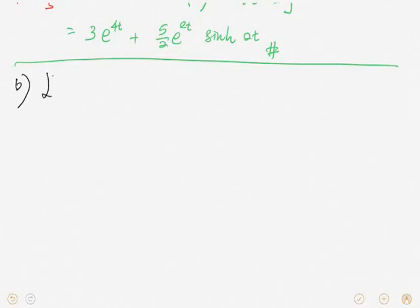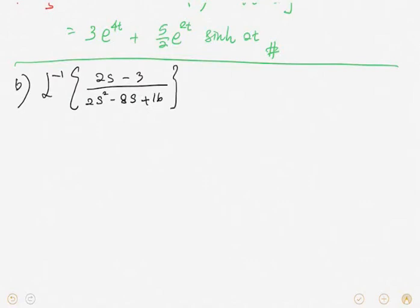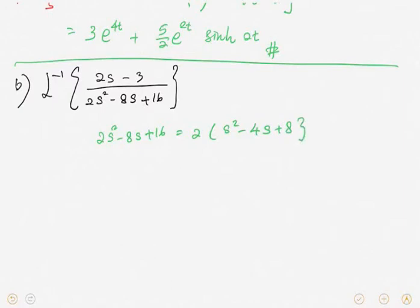Let's look at another example. Example B: inverse Laplace transform of (2s - 3) divided by (2s² - 8s + 16). How are we going to solve this? Bear in mind that 2s² - 8s + 16, we can factorize it — take out the 2 — giving 2(s² - 4s + 8). So we need to factorize s² - 4s + 8.